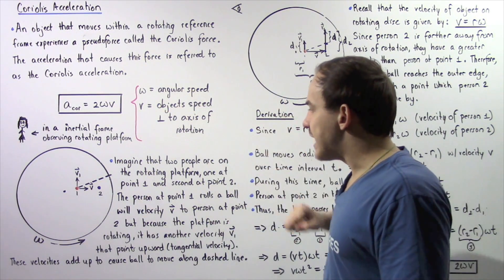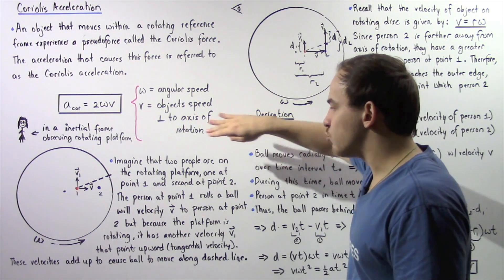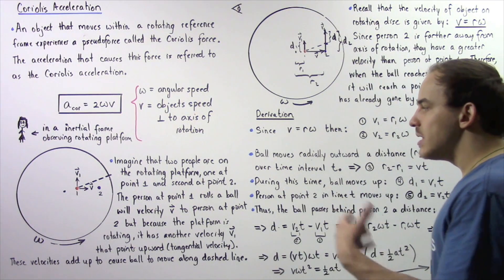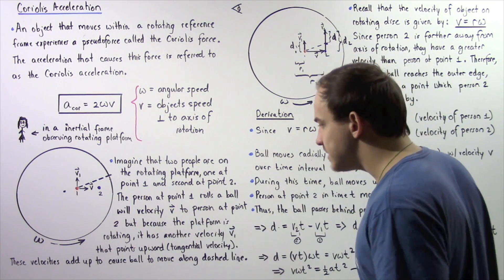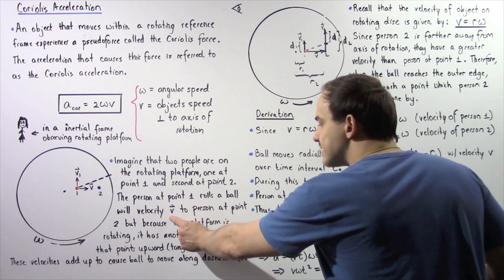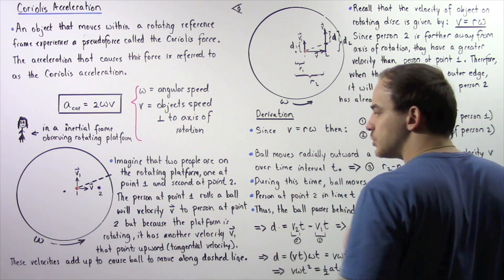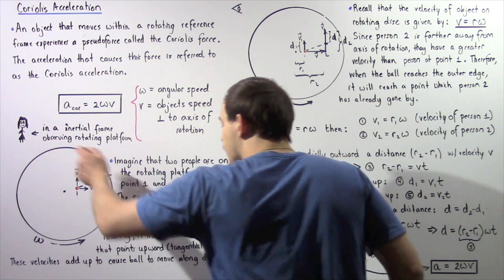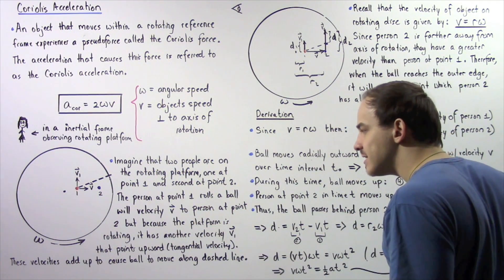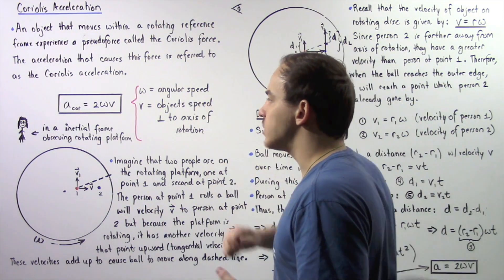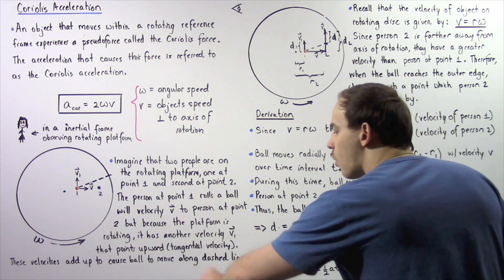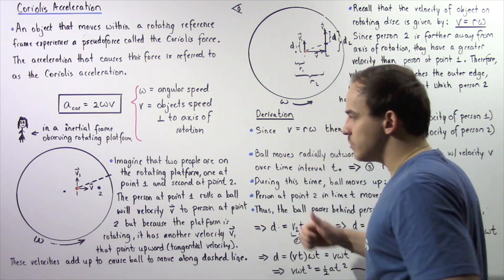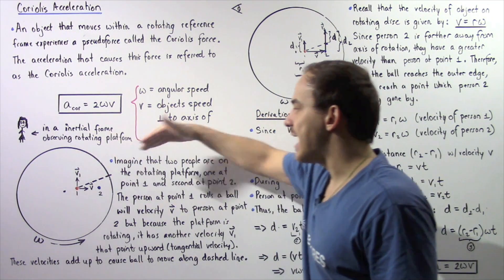So basically, as a result of the velocity along the x and y-axis, these two velocities add up to create a velocity vector at an angle with respect to the x-axis. This means the observer will see the ball travel along a dashed line. The person at point 1 rolls the ball with velocity V toward person 2, but because the platform is rotating, the ball also has a tangential velocity pointing upward along the y-axis. These two velocities combine, causing the ball to move along that dashed line.